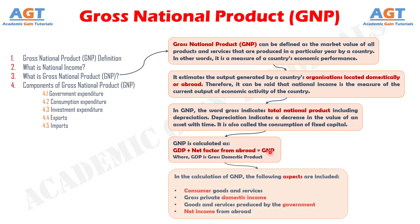In the calculation of GNP, the following aspects are included: number one, consumer goods and services; number two, gross private domestic income; number three, goods and services produced by the government; and number four, net income from abroad. To calculate GNP accurately, complete knowledge of its components is required.